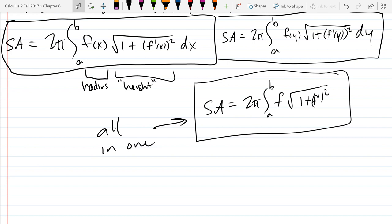This is, of course, if you have a function of x. If you have a function of y, it's pretty much the exact same thing. You just have little y's all over the place. You can pull the 2π out. So, however you want to write it. If you want one nice version, just leave out the x and the y all together.